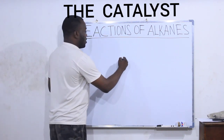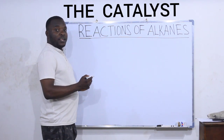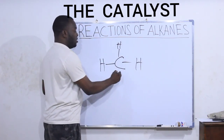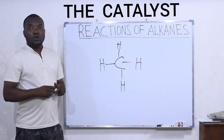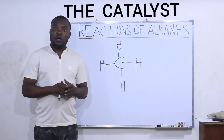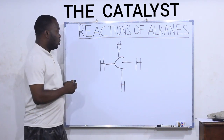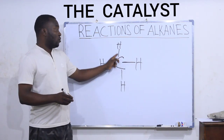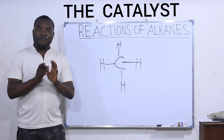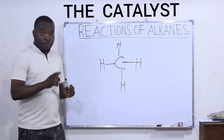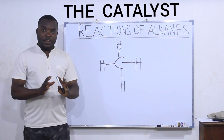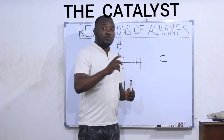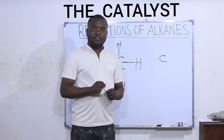First, we need to take a look at an alkane like methane, which is the first member of the alkane family. We need to know the type of reaction alkanes generally undergo. Looking at methane, you can see that all four bonds of the carbon atom have hydrogen atoms attached to them. Remember, in organic chemistry, every carbon atom present in an organic compound must have a total of four bonds attached to it.